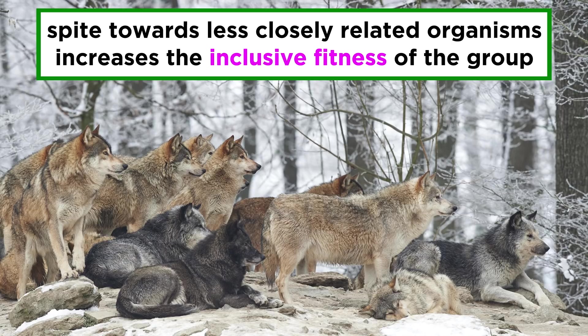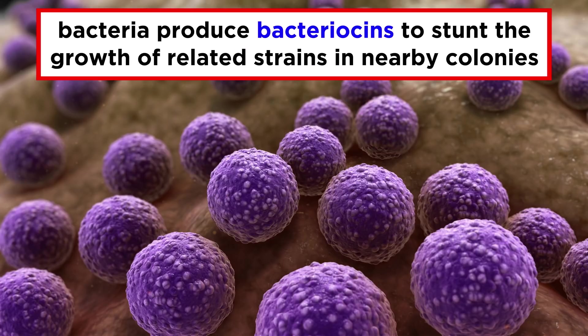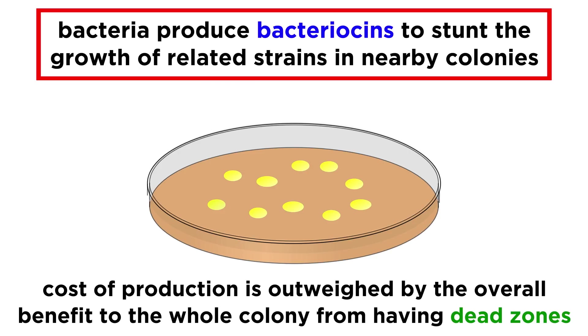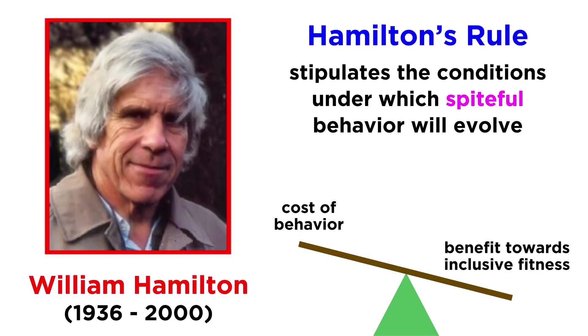Spiteful behaviors towards less closely related organisms, similarly to altruistic behaviors towards more closely related organisms, hurt the individual performing the action to help overall inclusive fitness, or the reproductive success of the group as a whole. For example, bacteria can produce toxins called bacteriocins to stunt the growth of similar or closely related strains in nearby colonies. Even though it's costly for these bacteria to produce bacteriocins, it's worth it for the colony as a whole to have spaces between the colonies, or dead zones, to help them compete less with neighboring colonies.